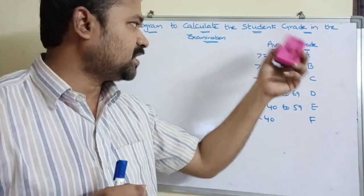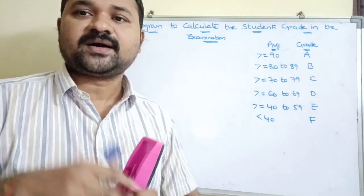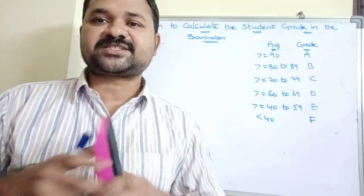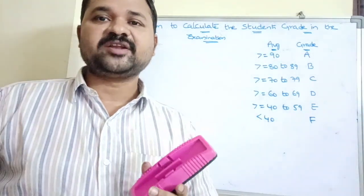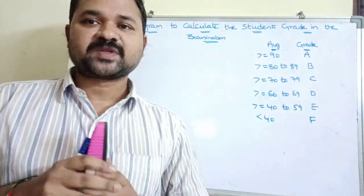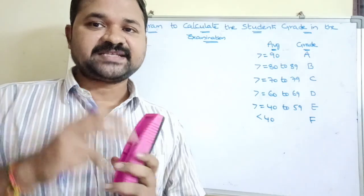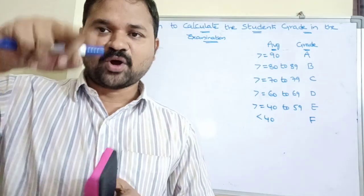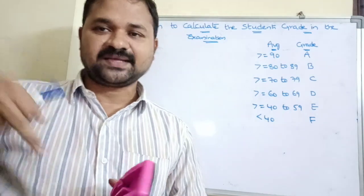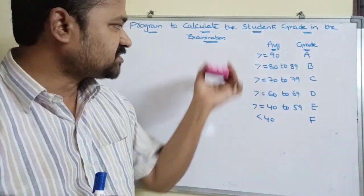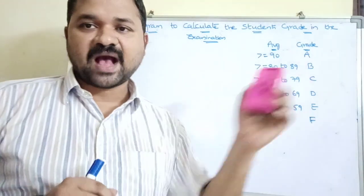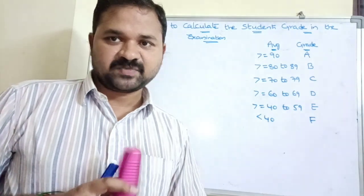In this example, the inputs are six subjects. We have to calculate the average — the average is nothing but the sum of the marks divided by the total number of subjects. Based upon the average, we then print the grade.